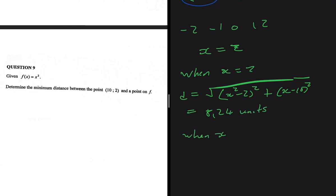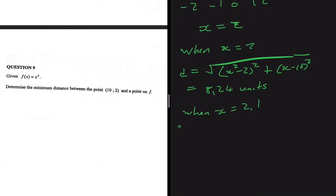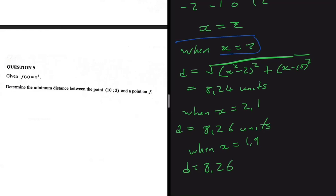When x = 2.1 we get a distance of 8.26 units, and when x = 1.9 we also get 8.26 units. Since both values slightly above and below 2 give a larger distance, we confirm that x = 2 gives the minimum distance of 8.24 units between the point (10, 2) and the function f(x) = x². You can try any other value of x to verify that you won't get anything less than 8.24.